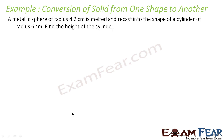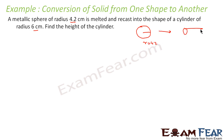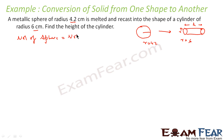The question says: a metallic sphere of radius 4.2 cm is melted and recast into the shape of a cylinder of radius 6 cm. We have to find the height of the cylinder. So let me draw this — this is the sphere of radius 4.2 cm, from which we are melting it and forming a cylinder. The radius is r equals 6 cm, and we have to find the value of h. As we have said, the volume of the sphere will be equal to the volume of the cylinder.